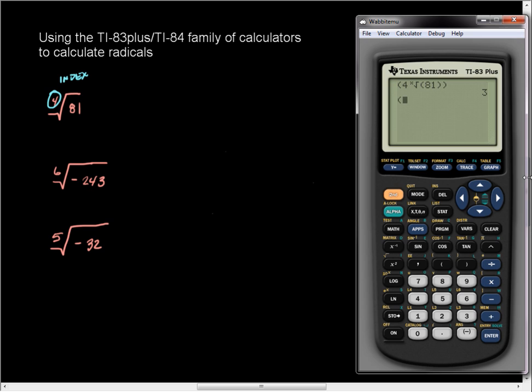So, I'm going to open a set of parentheses. I input the index. Then I say math. I say number 5 for x root. And then in the set of parentheses, I put negative 243. And I close both sets. Press enter. And I say, it's a non-real answer.